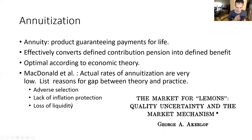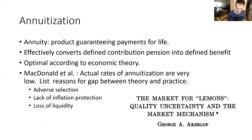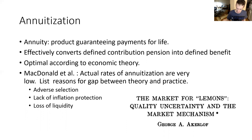First is adverse selection. The demographics of annuity purchasers differ significantly from the population as a whole, because the healthiest people — expected to live longest and receive the most payments — are most likely to buy annuities. Observing this shifted demographic, companies selling annuities must raise prices to cover costs, which further shifts the customer demographic. This vicious cycle can lead to market breakdown and may explain the relative thinness of the real-world annuity market.